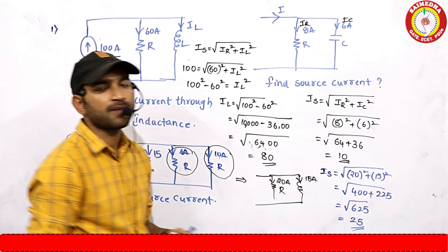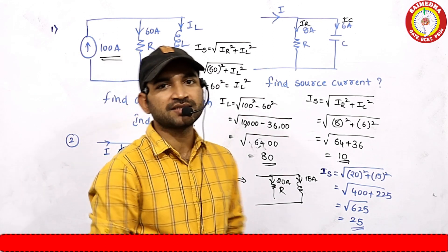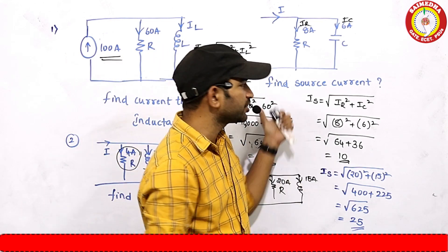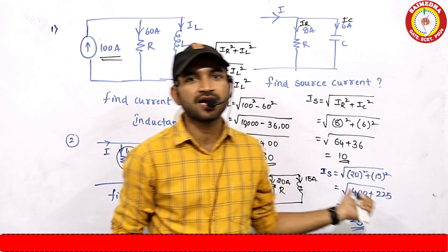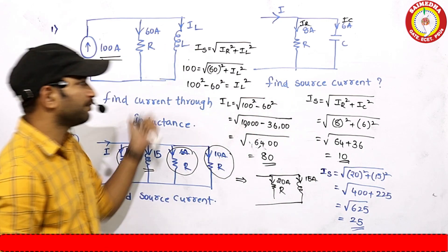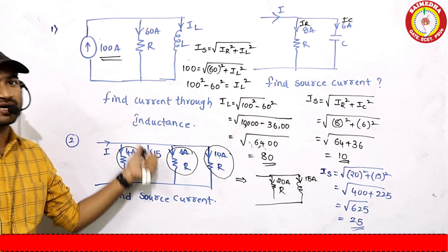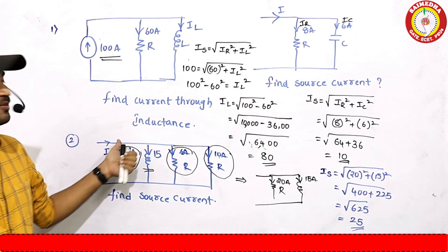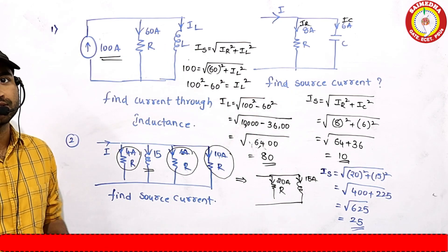Different types of problems — that is parallel circuit, equal to √(IR² + ...) — so we have to understand that this is a very important problem.